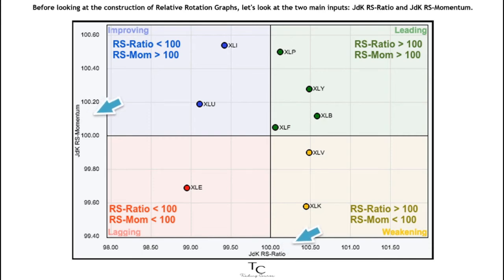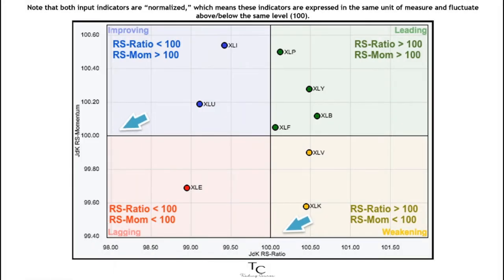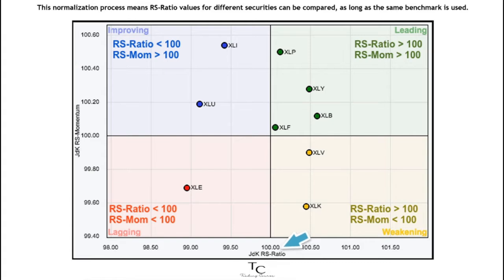Before looking at the construction of relative rotation graphs, let's look at the two main inputs: JDKRS ratio and JDKRS momentum. Note that both input indicators are normalized, which means these indicators are expressed in the same unit of measure and fluctuate above and below the same level, 100. This normalization process means RS ratio values for different securities can be compared, as long as the same benchmark is used.